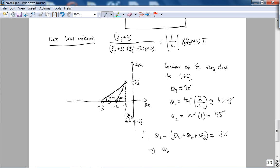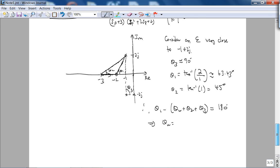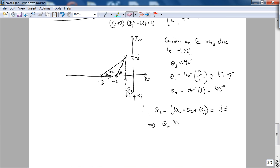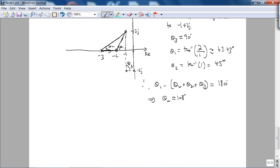So I get θ_unknown as approximately greater than 8 degrees. So this actually implies that we don't have any j omega axis crossings.